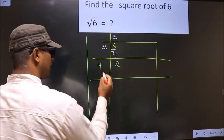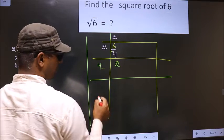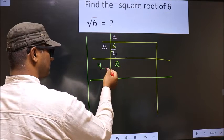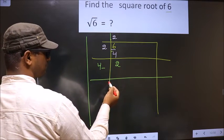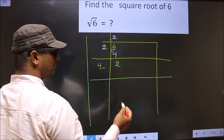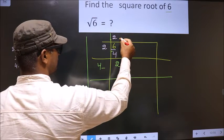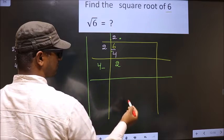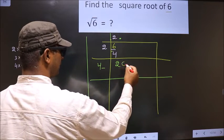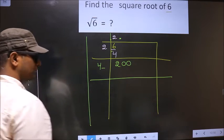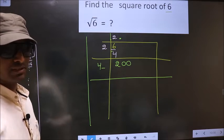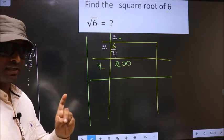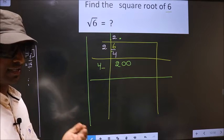Now I should write a number here, but this number will be smaller than the remainder. So we put a decimal and take zeros. But while finding the square root, we should take 2 zeros, not 1. Remember that.